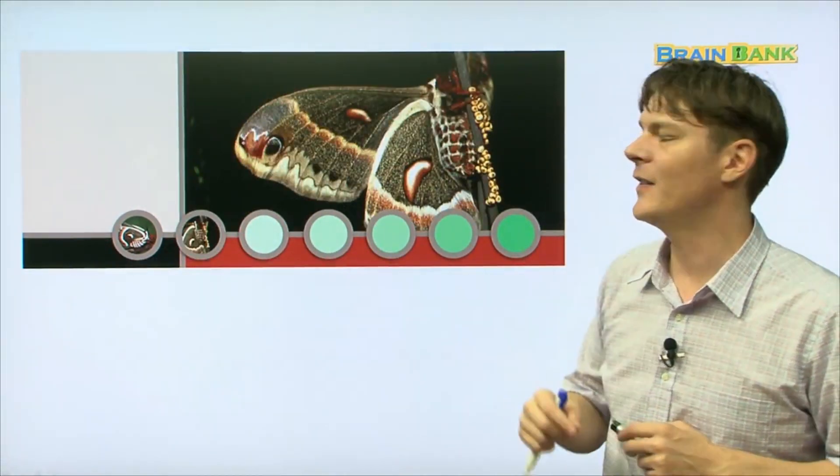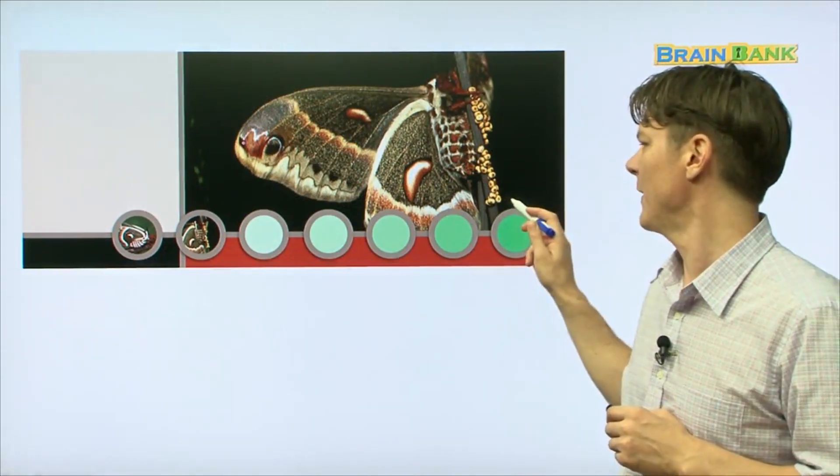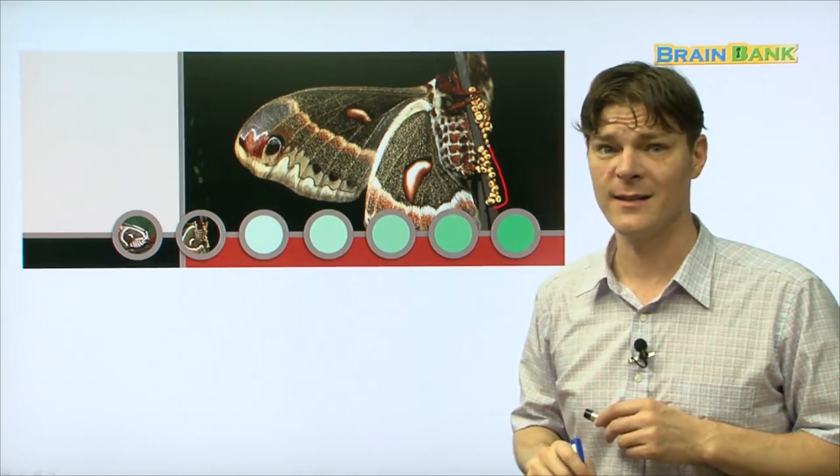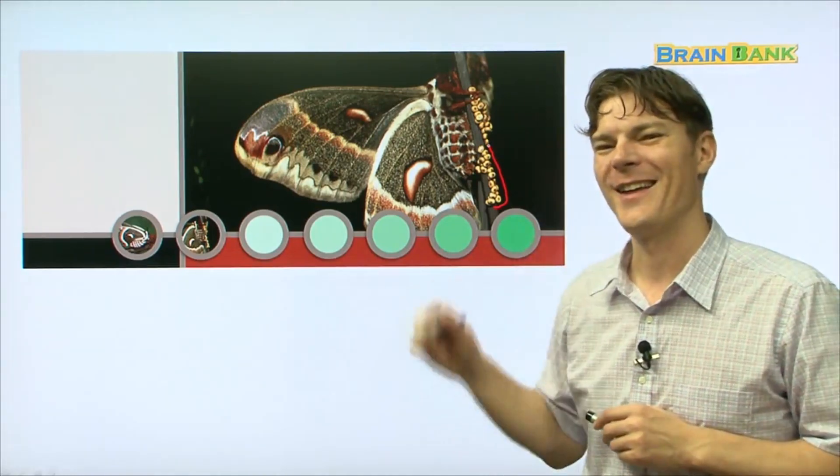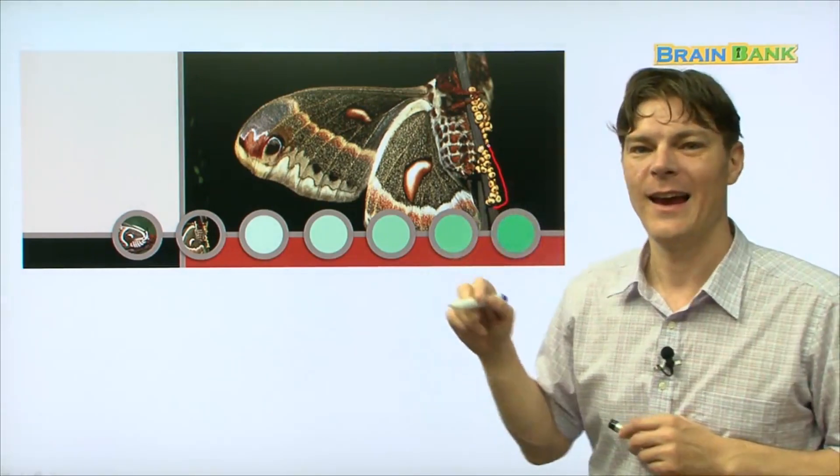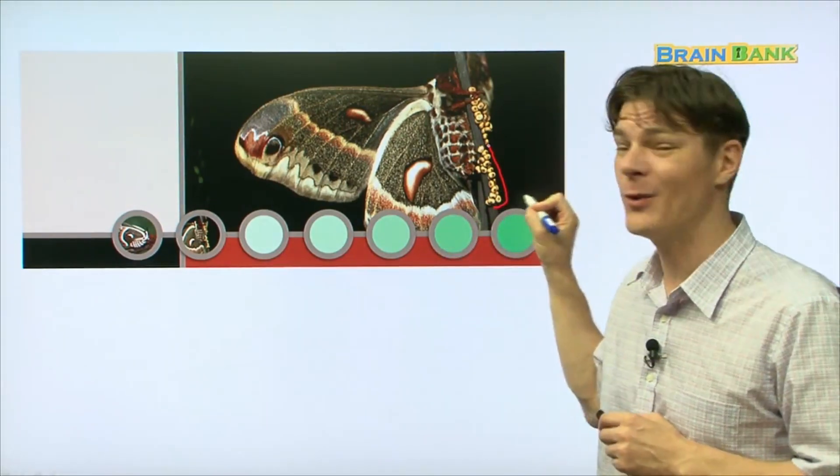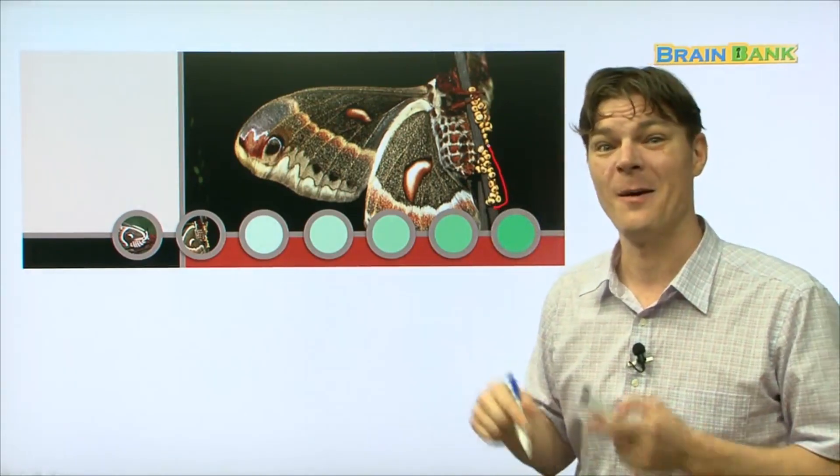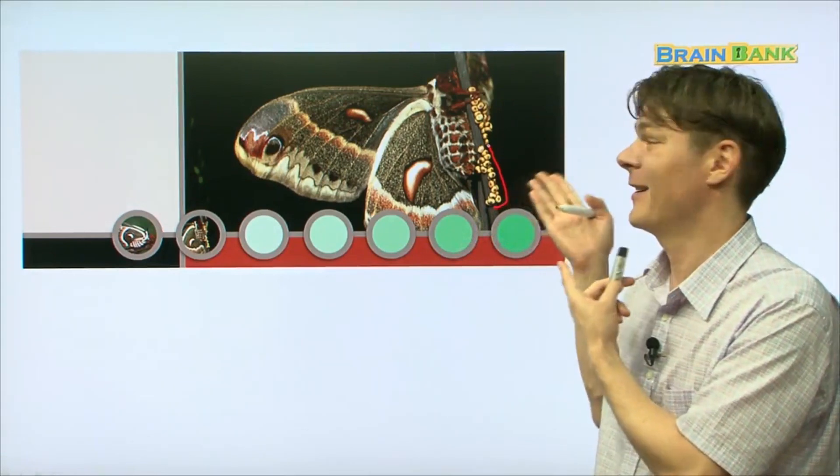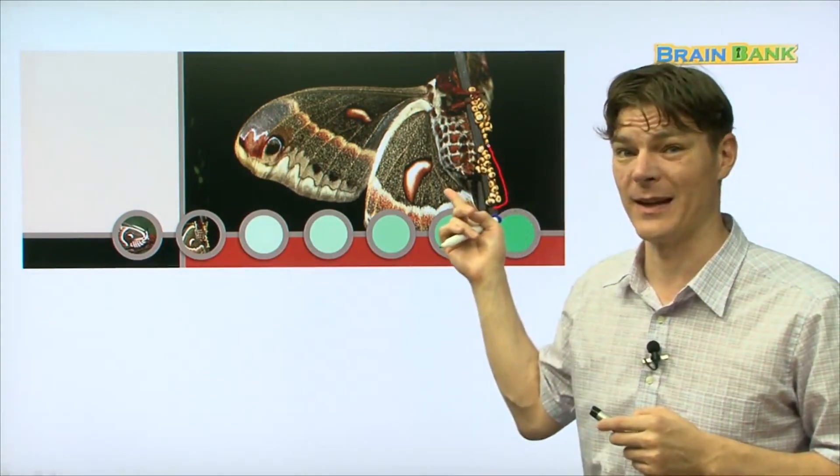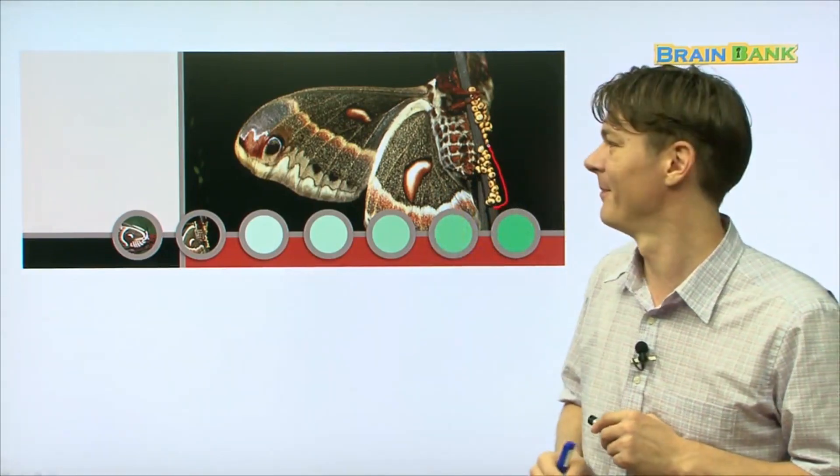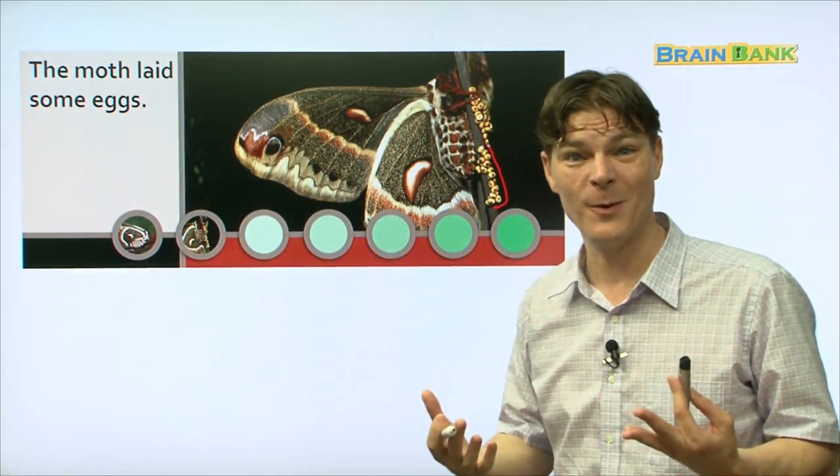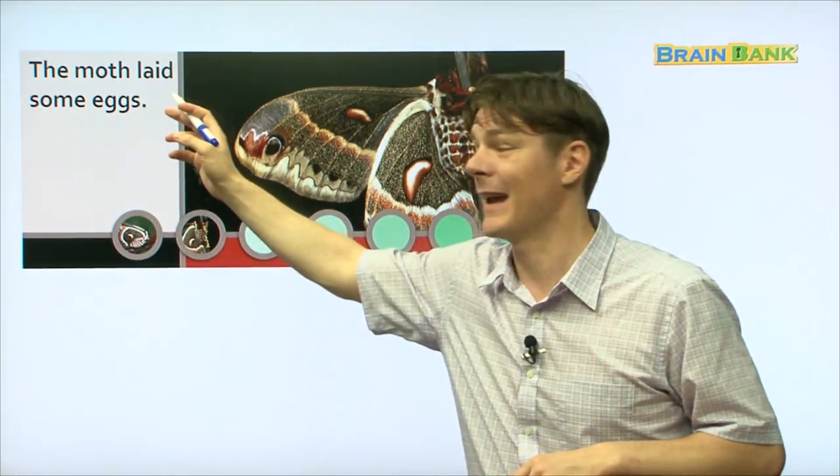So here, you can see this moth. And what do you think this is right here? Is that some kind of food that the moth is going to eat? No, no, no. Those are little eggs. And if you want to, you can try and count how many eggs you can see. We are not going to count them today. But I just wanted to tell you that those are eggs. So this is probably a mommy moth. The moth laid some eggs. Everybody repeat with me. The moth laid some eggs.